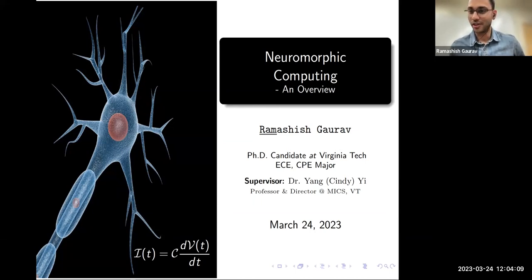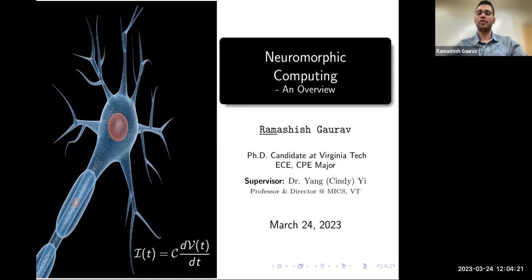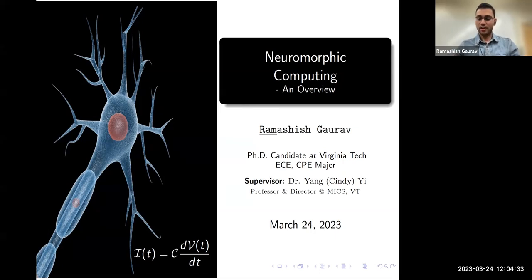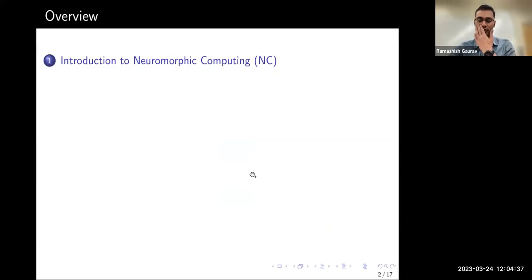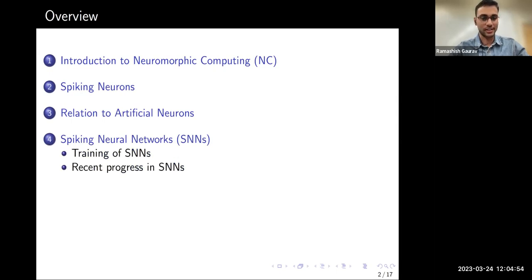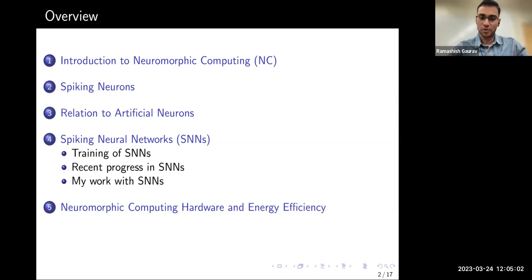Thank you, Professor, for the kind introduction. It's a privilege to be here among experts in various AI domains. Welcome to my talk on neuromorphic computing — you can call me Ram. I'm a PhD candidate at Virginia Tech, part of the MiX group, supervised by Professor Yang Ye. I'll cover an introduction to neuromorphic computing, spiking neurons, their relation to artificial neurons, spiking neural networks including training and recent progress, neuromorphic hardware and energy efficiency, and future directions.